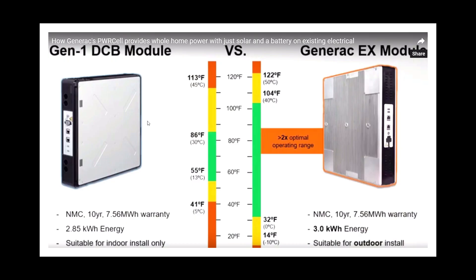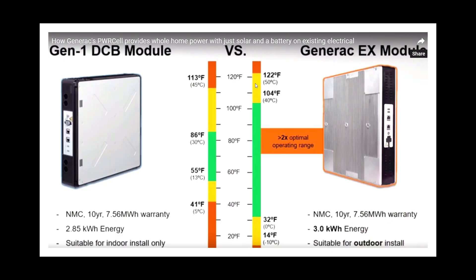This over here is the current battery module that comes with the Generac power cell system, the 2.85 kilowatt version. This over here is the new improved one. Again, I'm not sure when it's coming out, but it does 3.0 kilowatts and it operates over two times the optimal operating range of this battery, with that being the area in green here on both sides. So if you live in an area where you want to put it outside or you have more extreme temperature differentials in the winter and summer, then this new EX battery would probably be of interest to you, plus it has a little bit more storage capacity.